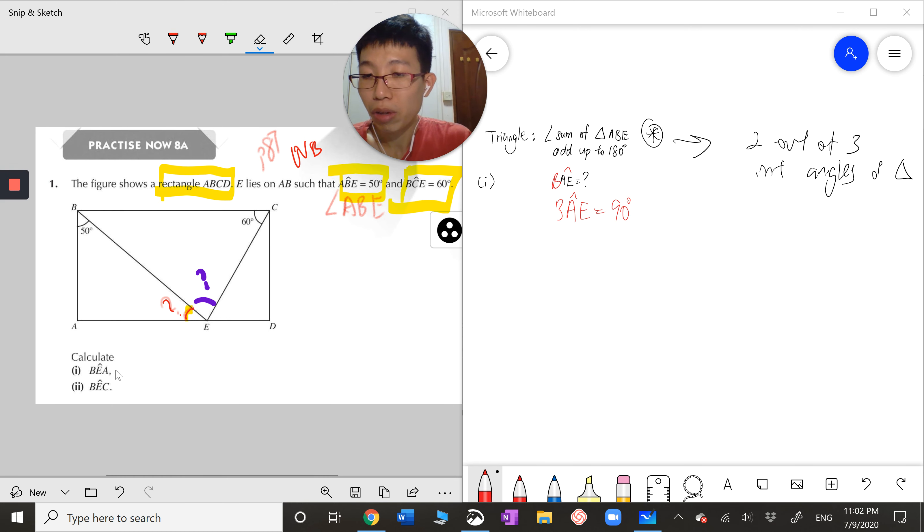Angle BEA is what you are trying to find. First step, highlight all the key information in the question. Rectangle ABCD and E lies on AB such that it creates 2 angles: angle ABE and angle BCE. Whenever I do this question I use a pencil to trace the angle BCE, so the angle is right in the middle between these two lines BC and CE. For the angles I need to find, I use a question mark and label on the diagram. The red question mark represents part 1, angle BEA. The purple question mark represents part 2, angle BEC.